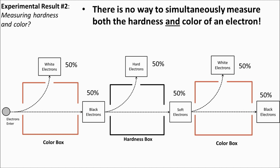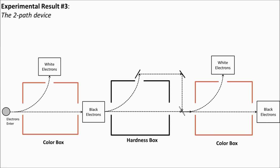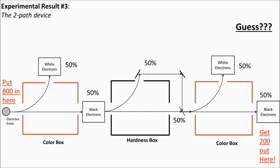Let's dig deeper. We're going to create a two-path device — a hardness box that changes the path of hard electrons so they rejoin the path of the soft electrons. The mirrors only change the electron's path and nothing else. So I repeat the experiment, replacing the normal hardness box with this two-path device, so that hard and soft paths recombine. If we put in 800 electrons, about 400 would be black, pass through the two-path device, and all 400 would then enter the last color box. Based on previous results, we'd expect 50% black and 50% white — around 200 electrons in the black hole.